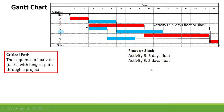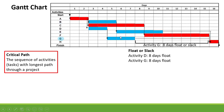Now, what is the float of the different activities not on the critical path? Activity E has a float of five days, so it can be delayed by five days before it impacts the critical path. B is also connected to E, so B can also be delayed by five days. Activity G has a float of eight days before it will impact the critical path. D is connected to G, and D has also got a float of eight days.